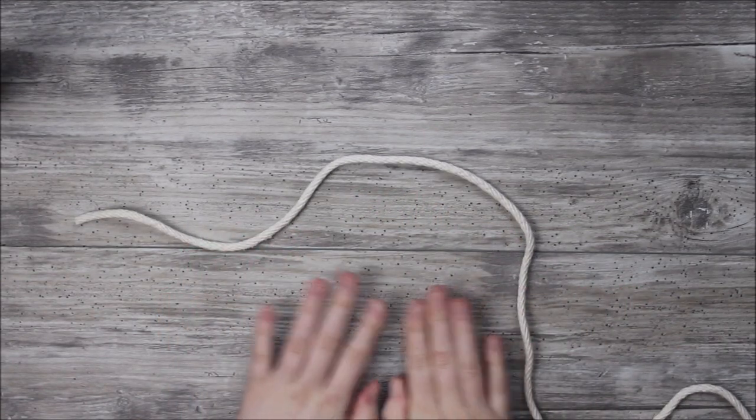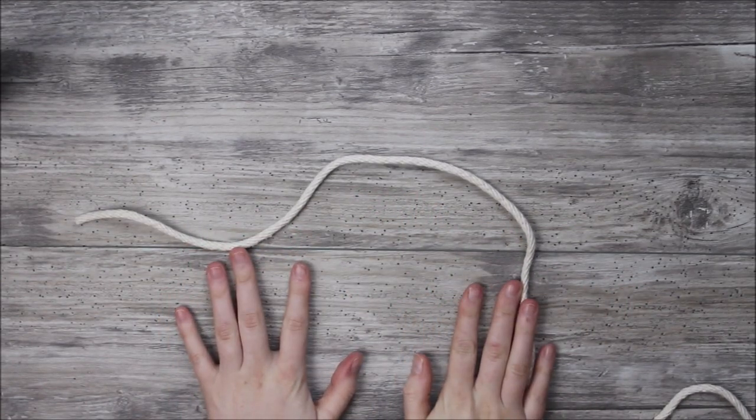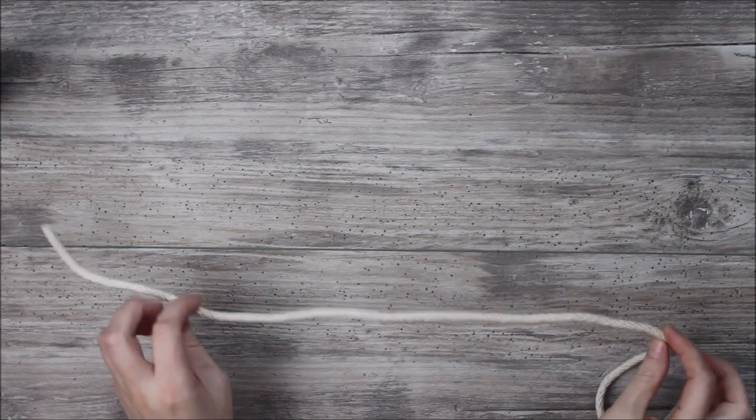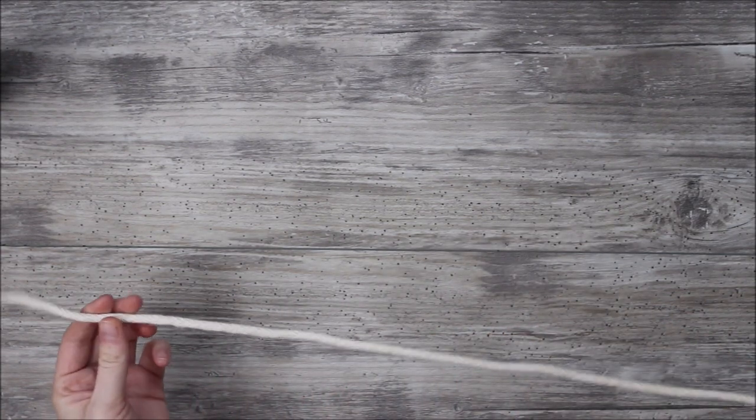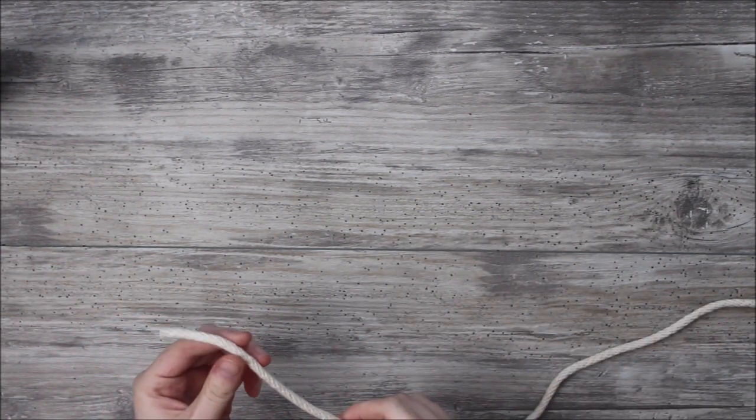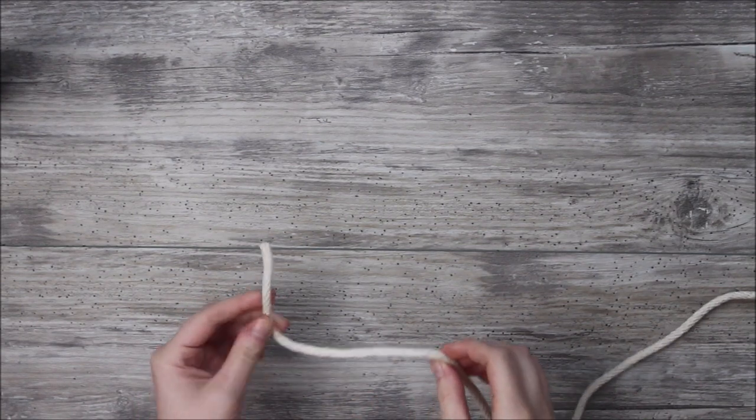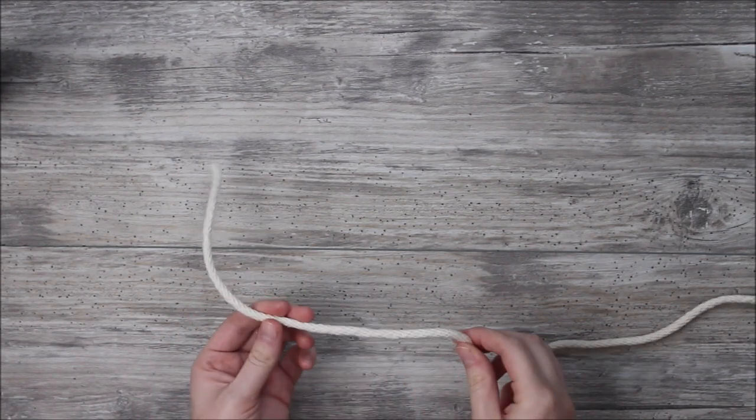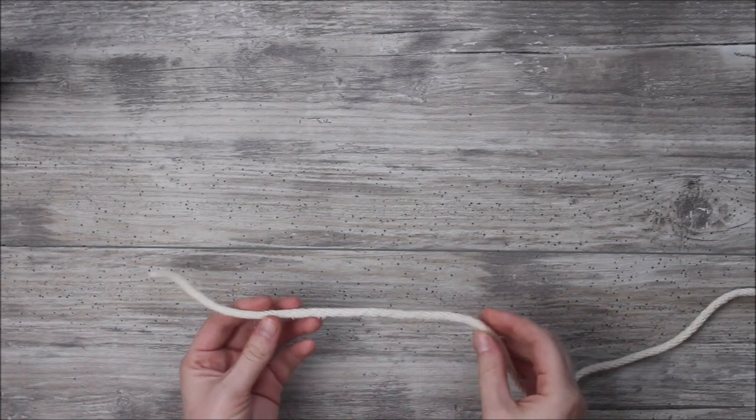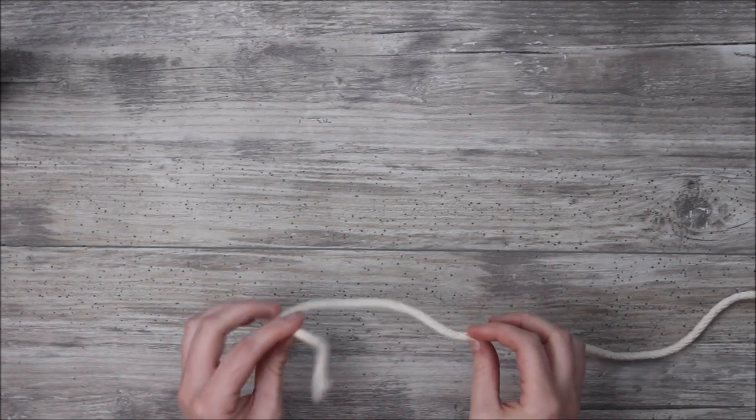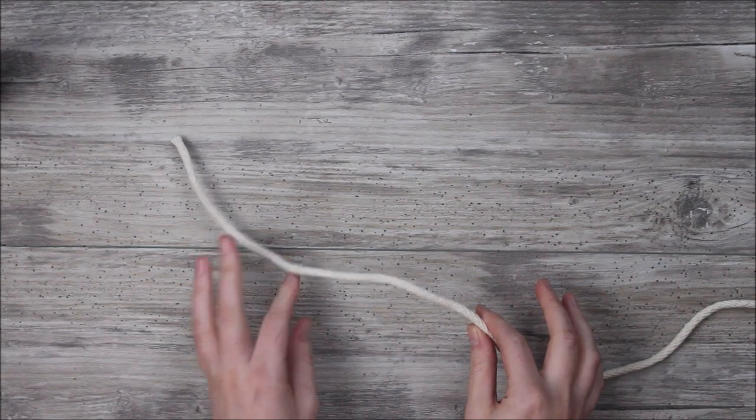For this tutorial, I am using a 5mm braided cotton cord, and mine is measured about 4 feet long. When you're first learning this knot, I think that it's best to use a more structured material like braided cord, paracord, or synthetic braided, something just with a little more structure.